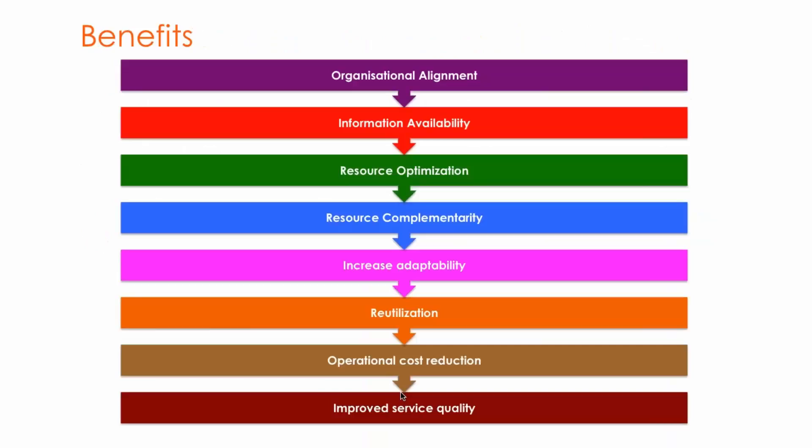The benefits of EA as an enabler of organizational agility include: organizational alignment, information availability, resource optimization, resource complementarity, increasing adaptability, reutilization, saving operational costs, and improved quality of service. These are the benefits you stand to gain with the implementation of enterprise architecture as an enabler of organizational agility.